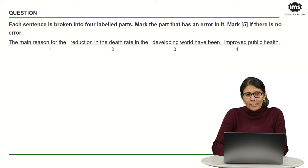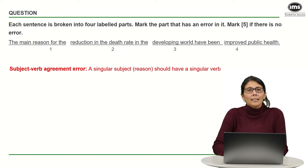If you read it, maybe it would strike you that the subject of the sentence is reason. Reason is a singular subject, but the verb all the way in part number three is have been. The concept being tested here is subject-verb agreement. The rule says that a singular subject must take a singular verb, but in this case, there is a mismatch.